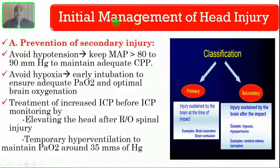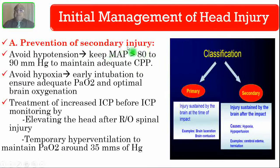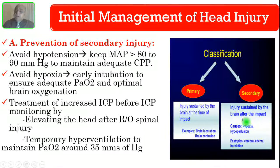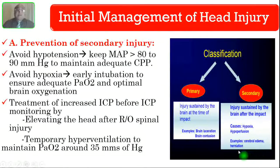What is the initial management in head injury? For all head injuries, initially you have to prevent secondary injury. Primary injury means the injury sustained by the brain at the time of impact — examples are brain laceration or brain contusion. Secondary injury means injury sustained by the brain after the impact, caused by hypoxia and hypoperfusion — examples are cerebral edema and brain herniation.